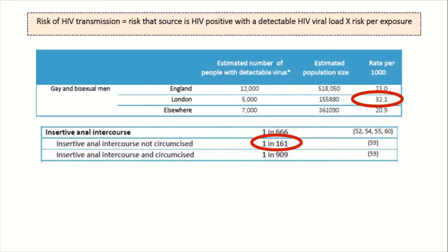The risk of transmission is equal to the risk that the source is HIV positive with a detectable HIV viral load. In this case we do not know the HIV status of B, so we have to use the tables in the BASH guidelines. We can see that for gay and bisexual men living in London, the prevalence is 32.1 per 1,000 people. We then multiply that by the risk per exposure, taken from the BASH table on insertive anal intercourse.